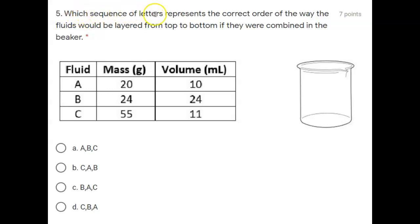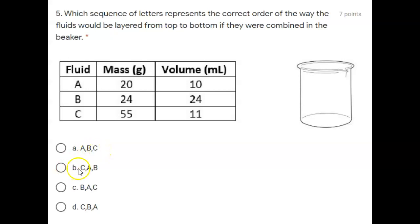Number five. Which sequence of letters represents the correct order of the way the fluids would be layered from top to bottom if they were combined in this beaker? Fluid A, B, and C. Is the correct order of layering: A) A, then B, then C? Or B) C, then A, then B? Or C) B, then A, then C? Or D) C, then B, then A? Which is the correct order from top to bottom?